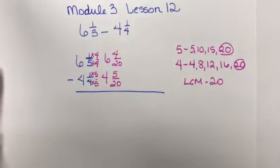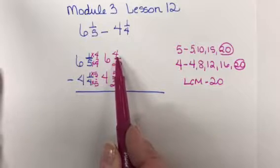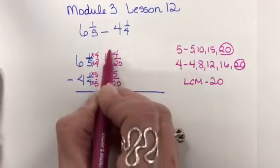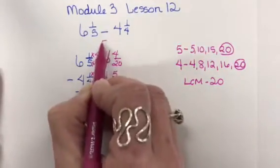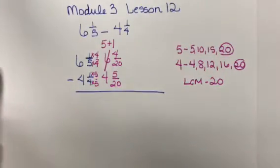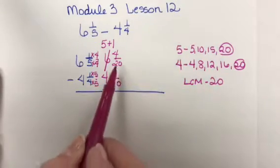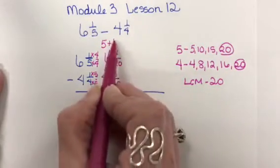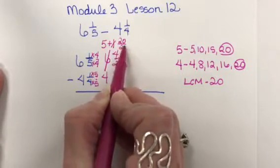But when I look, I cannot take 5 from 4. So I'm going to have to borrow from my 6. Remember, you can make your 6 into 5 plus 1. But we're going to make the 1 into a fraction because any number over itself is equal to 1. Since our denominator is 20, I'm going to make this 1 into 20 twentieths.